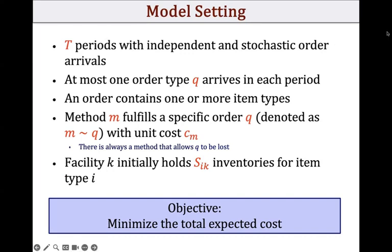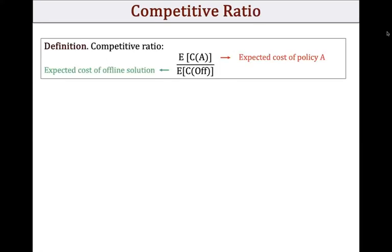Let me now go over the performance measure we use to evaluate a fulfillment policy. The performance measure is the so-called competitive ratio, which is the ratio between the expected cost of a fulfillment policy A compared against the expected cost of the offline solution. You can think of the offline solution as the solution to the problem in which you already know the entire sequence of order arrivals.